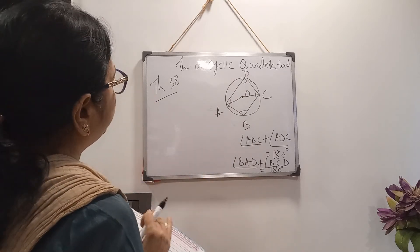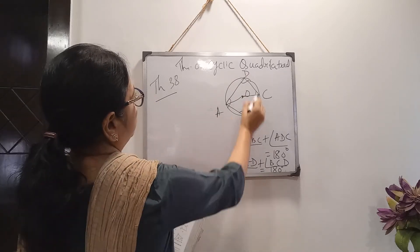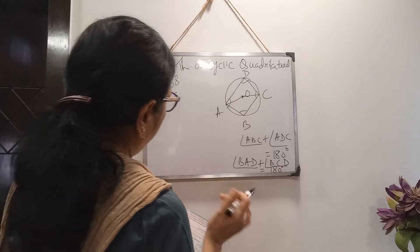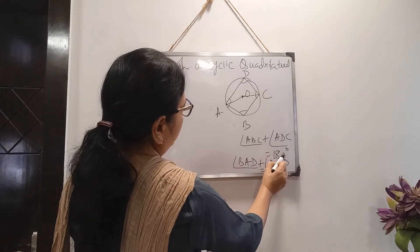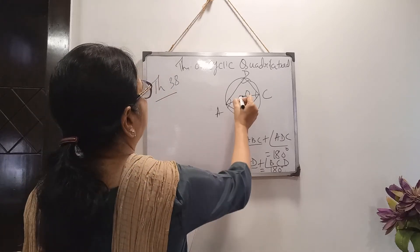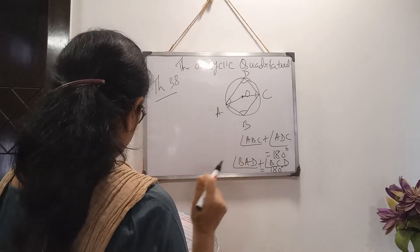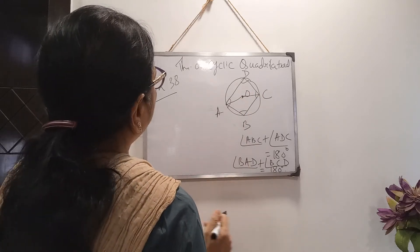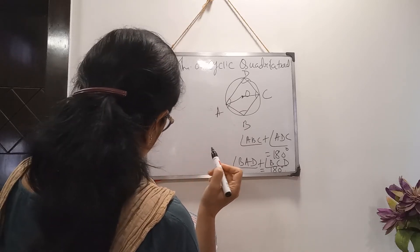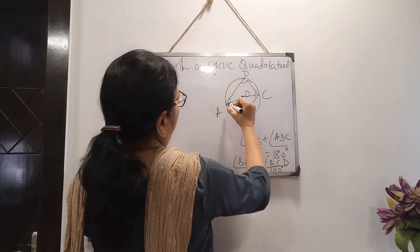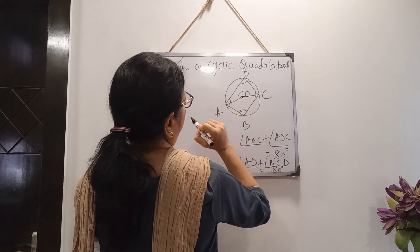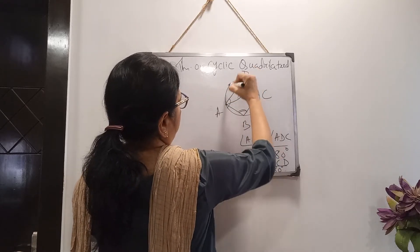What is given? It is given that ABCD is a cyclic quadrilateral and the center of the circle is O. We have to prove that angle ABC plus angle ADC equals 180 degrees, and angle BAD plus angle BCD equals 180 degrees. We have joined AO and OC.